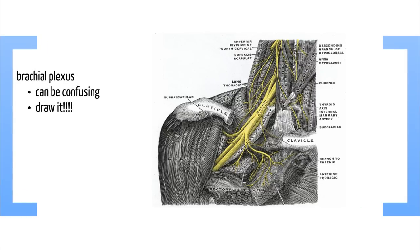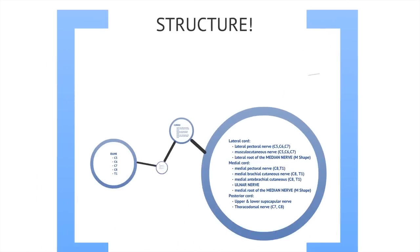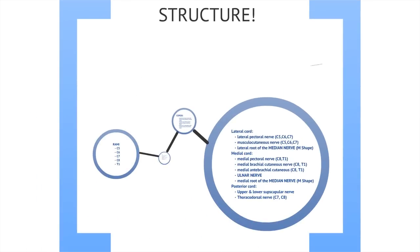Let's now move on to the brachial plexus. A lot of medical students find this topic very confusing, but the best way to learn this topic is to draw it. The structure I'm proposing is to separate the different components of the brachial plexus. So let's start with the rami.